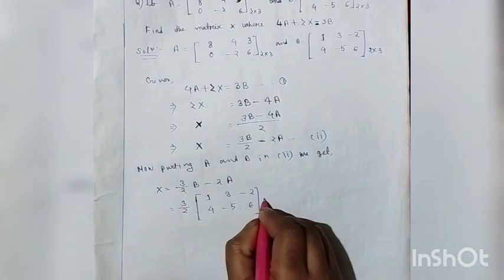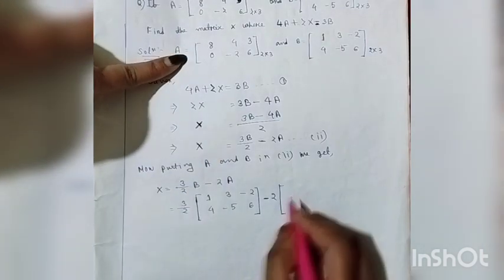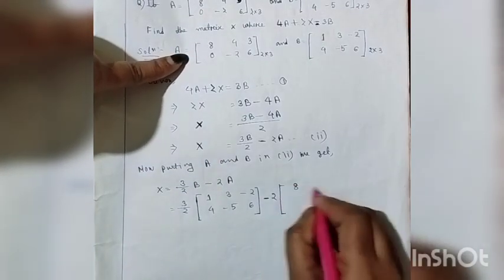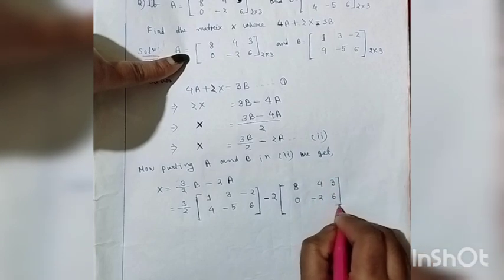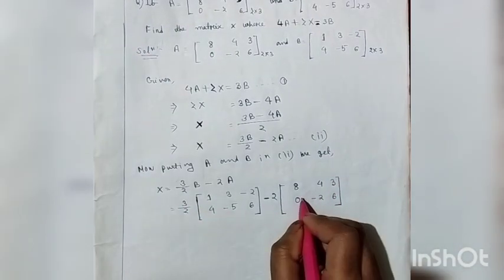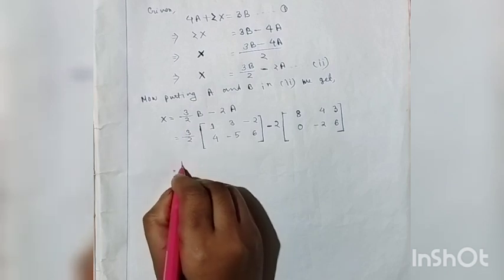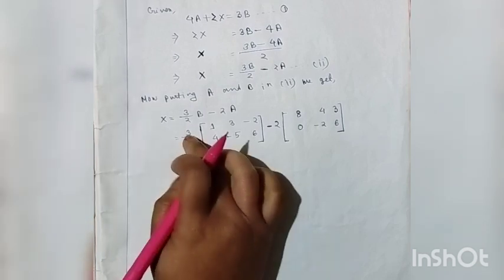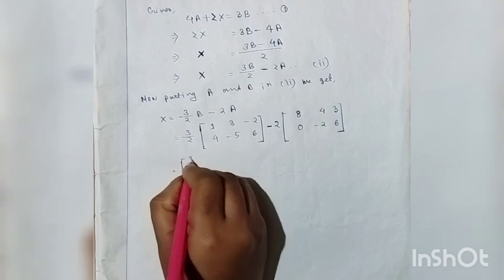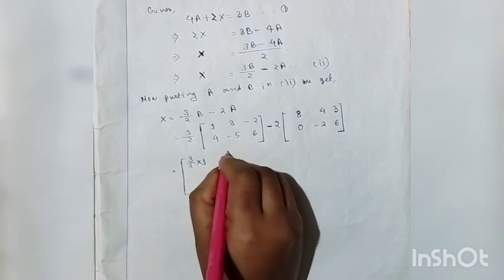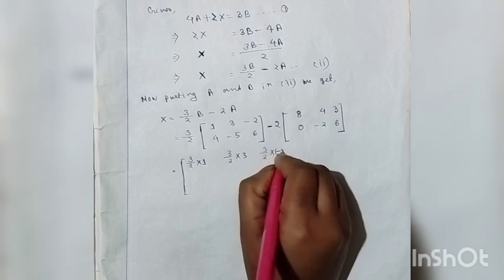Matrix B is: 1, 3, minus 2; 4, minus 5, 6. We subtract 2 times matrix A, where A is: 8, 4, 3; 0, minus 2, 6. Expanding the scalar multiplication: (3/2) into 1, (3/2) into 3, (3/2) into minus 2 for the first row; (3/2) into 4, (3/2) into minus 5, (3/2) into 6 for the second row.